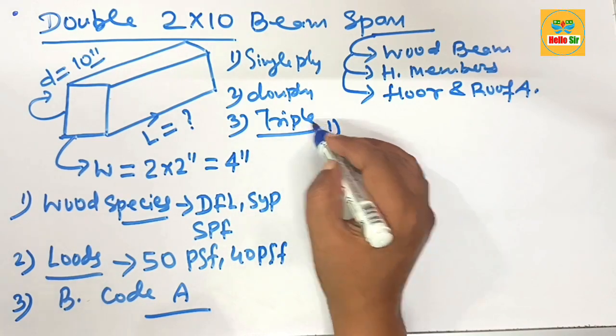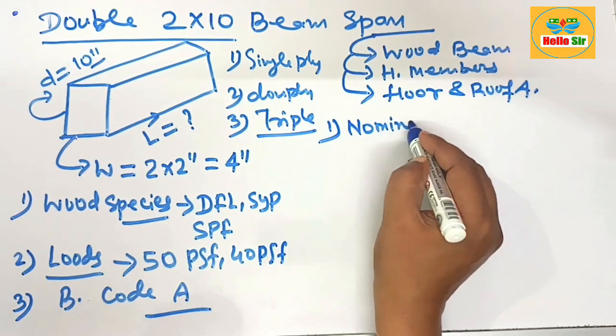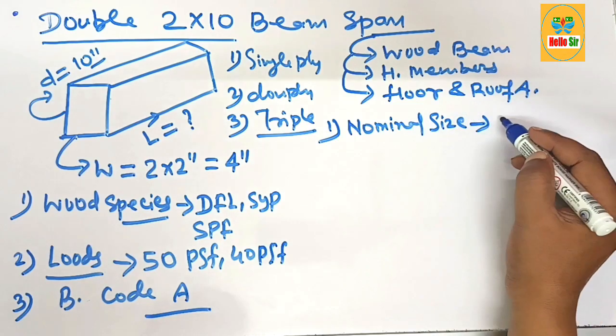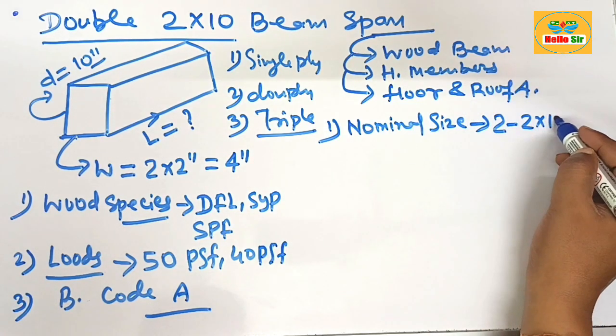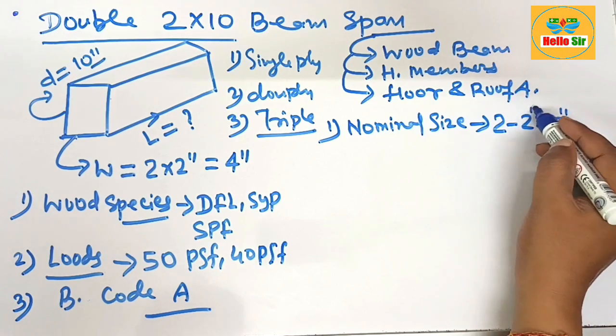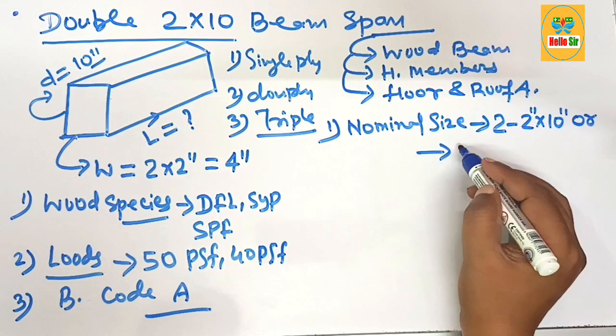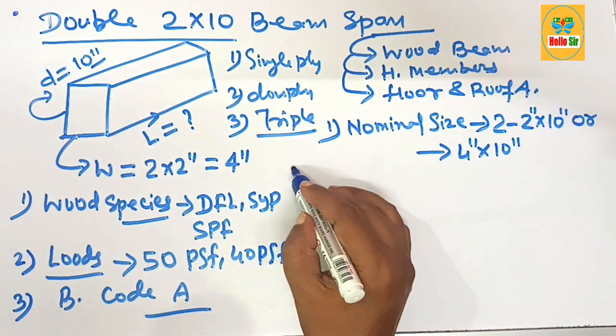First understand the nominal size of this beam. Nominal size of this wood beam is double, means two pieces of 2 by 10 inch wood beam nailed together, or it can be also written as 4 inch by 10 inch. This one is the nominal size of this beam.